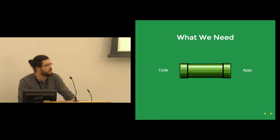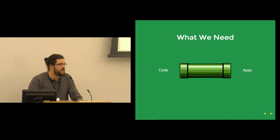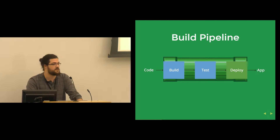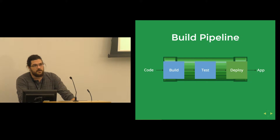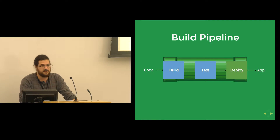So how do we make that happen? We need something that we put code into one end of and out the other end come apps. That thing is called a build pipeline. The build pipeline can be thought of in three separate phases: we have a build phase, a test phase, and a deployment phase.